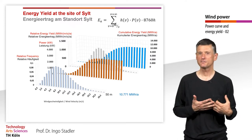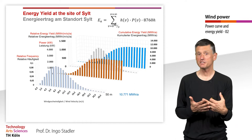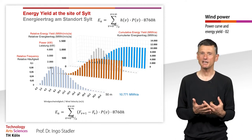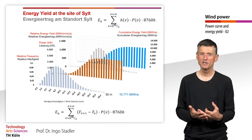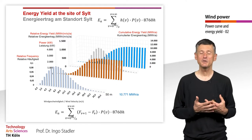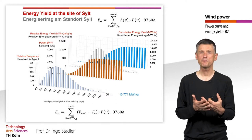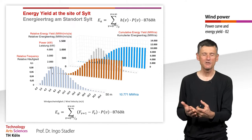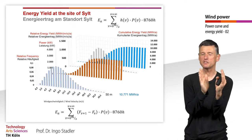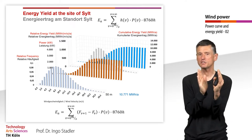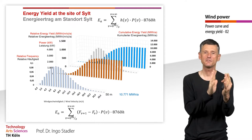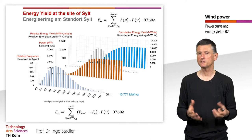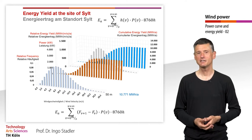We can also write this formula differently. When we replace the relative frequency h(v) by the term [f(v+1) − f(v)], we get the exact probability of a wind speed class — for example, between 3 and 4 m/s. The difference is not very big, but there is a slight difference.